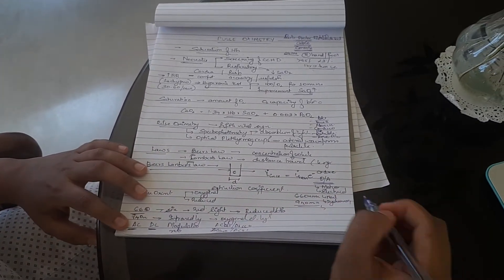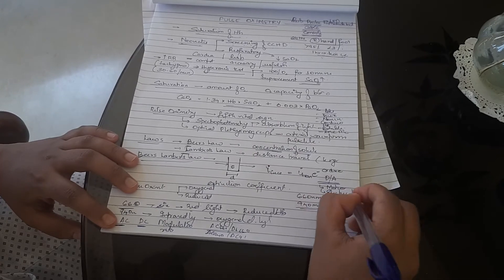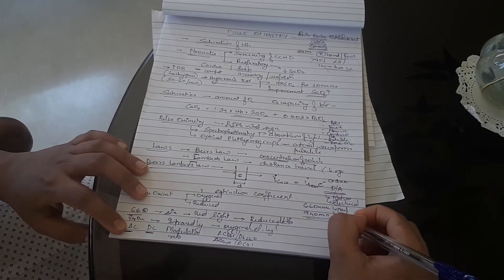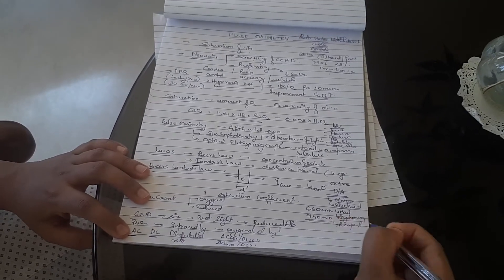One more problem: dyshemoglobinemia I told you, nail color I told you, electrical I told you. If the patient moves his fingers, it's going to be a problem. If the patient has poor perfusion, it's going to be a problem.